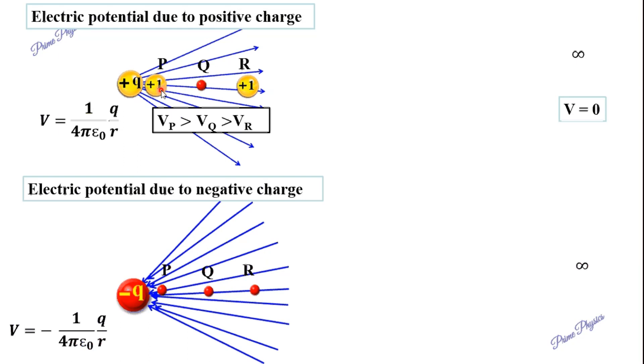Work done by external force. Now, what is potential at infinity? It is zero.